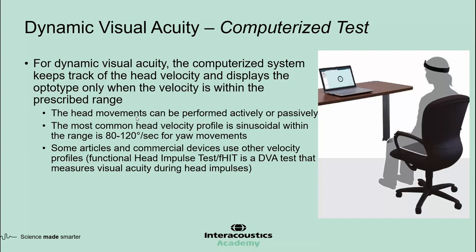As with the bedside testing, head movements can be performed actively or passively. The most common head velocity profile is sinusoidal within the range of 80 to 120 degrees per second for horizontal or yaw movements. Some articles and commercial devices use other velocity profiles. For example, you may be familiar with the functional head impulse test or FHIT. FHIT is actually not a head impulse test — it is a DVA test that measures visual acuity during impulsive head movements.